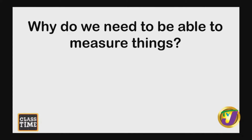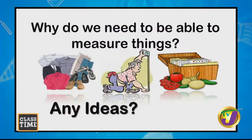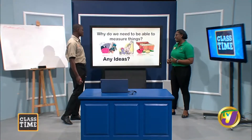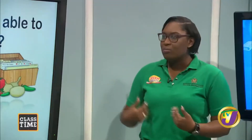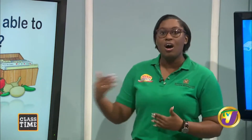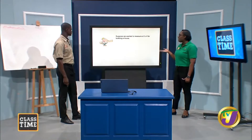Why do we need to be able to measure things? As you can see on the graphics, if you're going to buy a suit of clothes or a pair of shoes, you'd want to know your actual size. We need to know exact measurements — what size my shirt is, what size my shoe is, how long a piece of board should be.